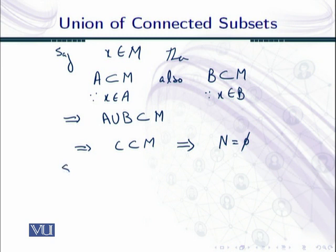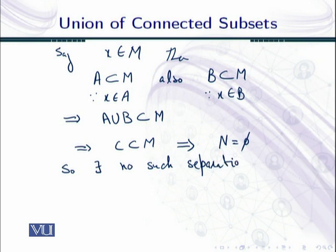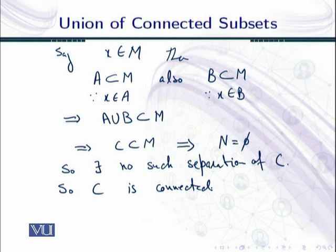This implies that N is empty. But N was assumed to be non-empty, so there exists no such separation of C. Therefore, C is connected.